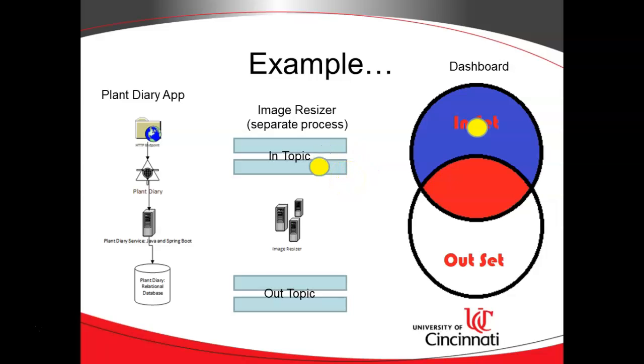Separately, the image resizer also subscribes to this in topic and it also gets a copy of this object. So it does its resizing, which might take a few moments. When it's finished, it essentially confirms that the resize is complete by publishing this object on the out topic. Because it's a topic, we can have multiple subscribers again and one of the subscribers is our dashboard. So this object now goes to our out set as well. And remember that in a set, items have to be unique.